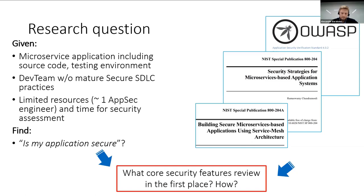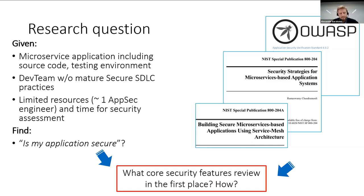Because the task is very general, the AppSec engineer might just start a scanner and look for SQL injection, cross-site scripting, and other vulnerabilities. But that is not what the customer or stakeholders actually need. The customer really wants to find some critical issues that may greatly affect the application in the future. So what stakeholders really need is a security architecture assessment.